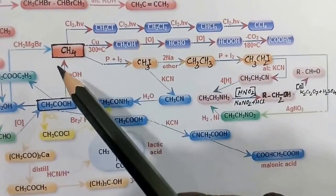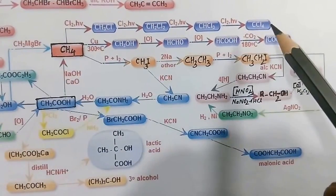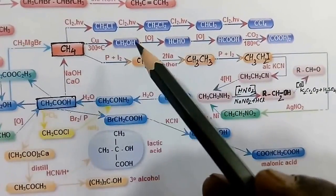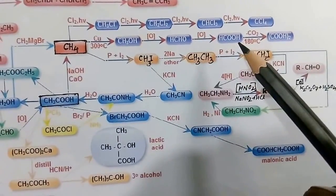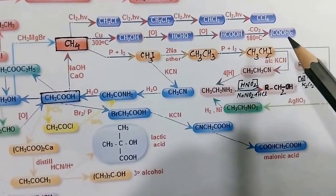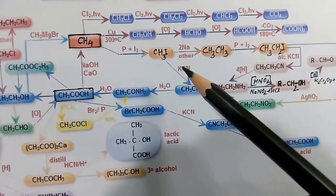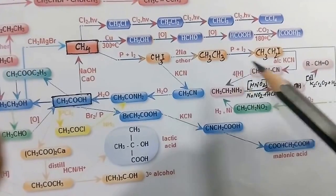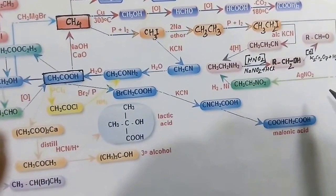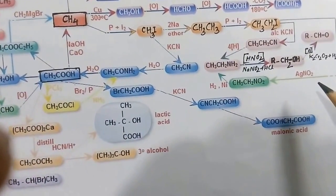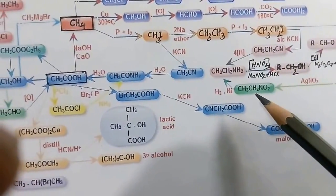To summarize from methane: methane to methyl chloride, methylene chloride, chloroform, and carbon tetrachloride; methane on oxidation gives methanol, formaldehyde, formic acid, and oxalic acid; and from methane to methyl iodide, ethyl iodide, and ethyl iodide treated with silver nitrite gives nitroethane.